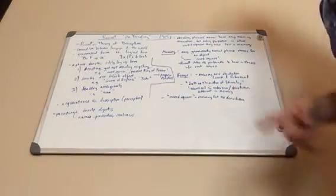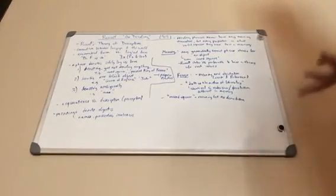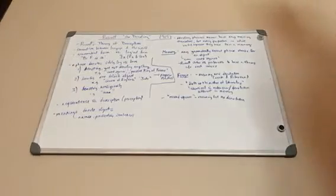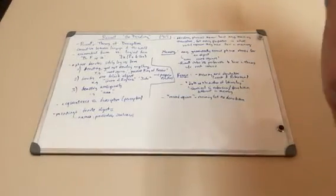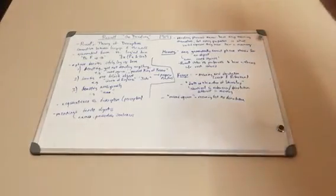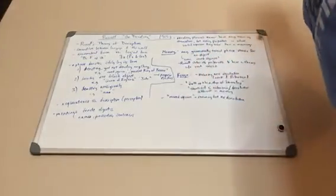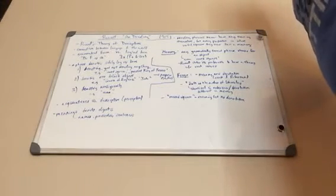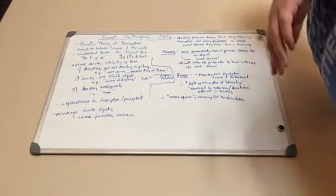Specifically, whether names, predicates, and sentences have meaning in themselves, and what his theory of descriptions does give — a theory of meaning. Frege, who I've talked about before, has a theory of meaning via his twofold notion in Sense and Reference.